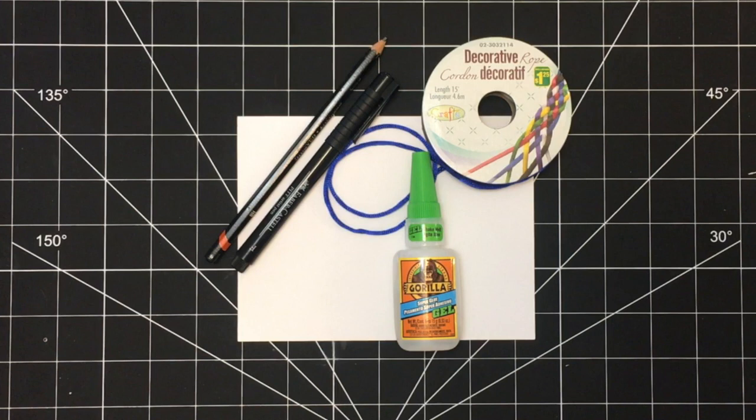All the supplies you need are shown here and linked below. That includes some paper for the base of the card, a pencil, a thin black pen, some thin cord blue ribbon, or if you want you could also use a blue pen to get a similar look and then of course glue to glue on the ribbon.